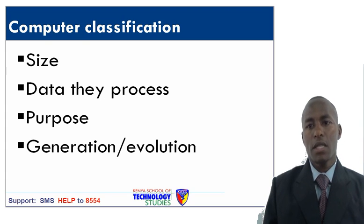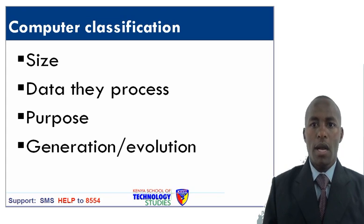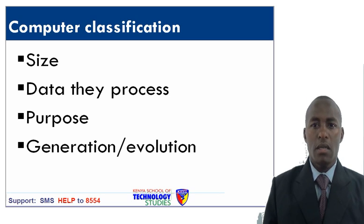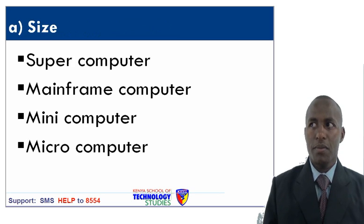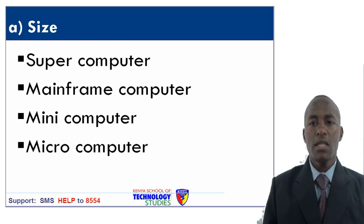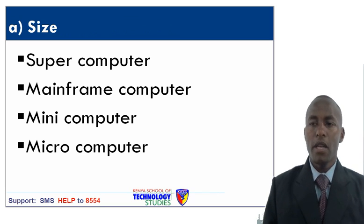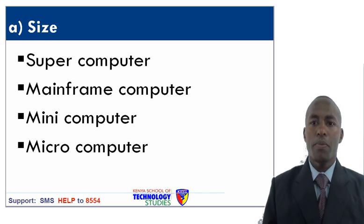Computer classification. A computer is classified into four categories: size, data they process, purpose and generation. Under size, we have four types of computer: super computer, mainframe computer, mini computer and micro computer.